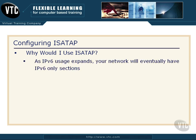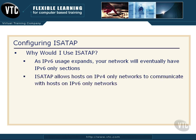Why would we use ISATAP? As IPv6 usage expands — and it will, even if you're not using it in your network right now — it's eventually going to happen. Once you start converting to IPv6, you're going to have parts of your network that convert completely first, giving you some IPv6-only subnets on your network, and then some IPv4 subnets. ISATAP will allow hosts on those IPv4-only networks to communicate with hosts on the IPv6-only network.